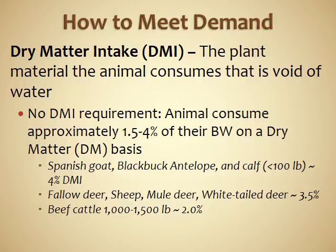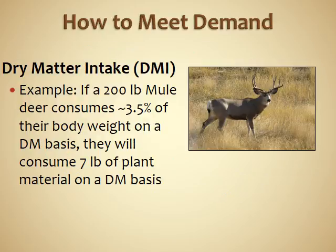Fallow deer, sheep, mule deer, and white-tailed deer consume about 3.5% of their body weight in dry matter intake, whereas beef cattle weighing 1,000 to 1,500 pounds consume about 2% of their body weight. To calculate dry matter intake, you determine how much the animal weighs. For example, a 200-pound mule deer consuming 3.5% of its body weight on a dry matter basis will consume about 7 pounds of plant material.